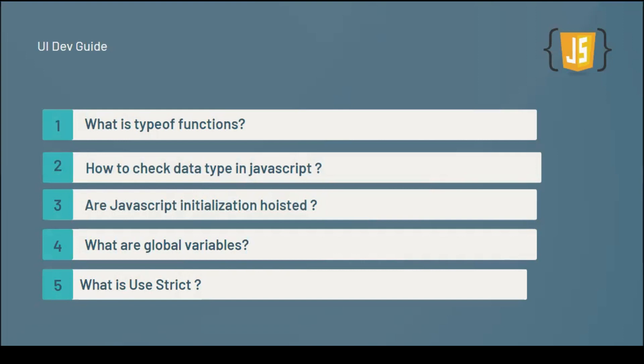The third question is: are JavaScript variable initializations hoisted? This is a tricky question. If you create a variable at line 10 but try to access it at line 2, 3, 4, or 5, the initialization or assignment won't be available — only the declaration is hoisted, not the assignment. Many people get confused about this, so try it in the console.